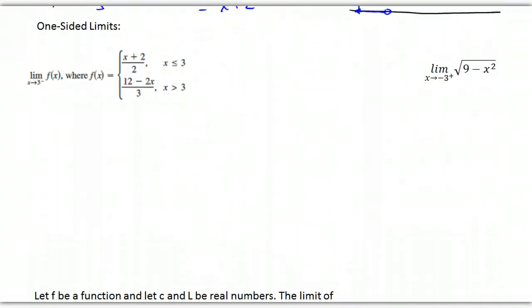Now, sometimes we are interested in just what's happening on one side of a limit. And so, we have a little notation here. This reads, the limit of f of x as x approaches 3 from the left. That's what that little negative sign means right there, from the left.